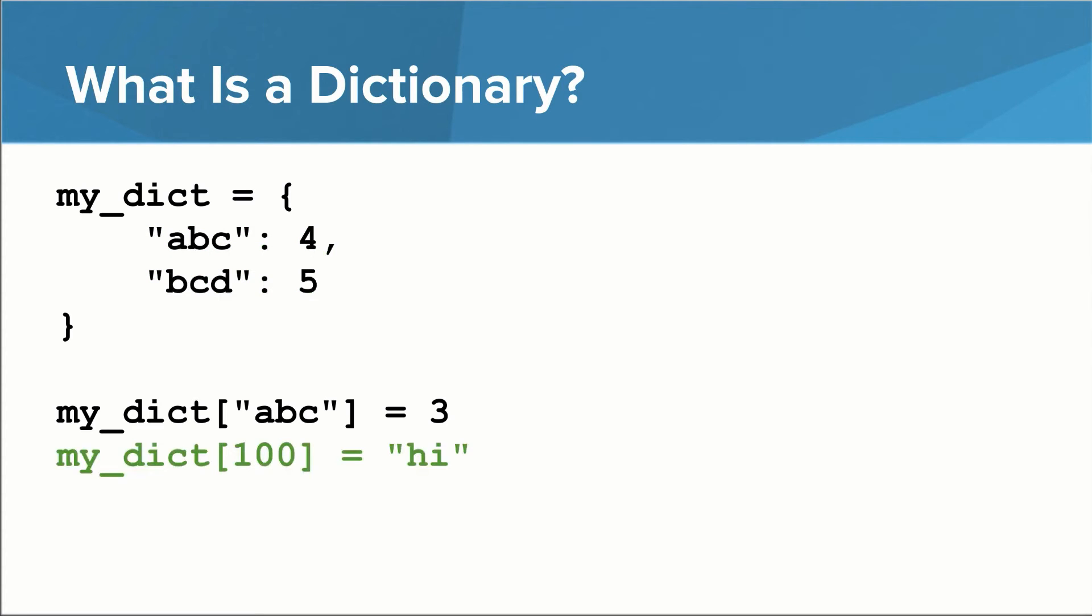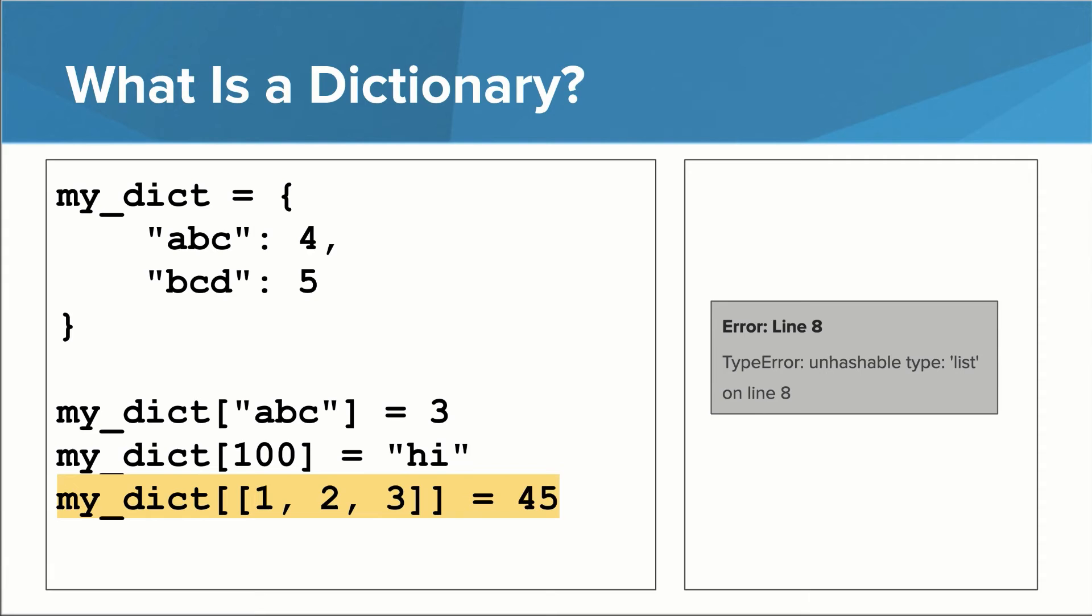The keys in a dictionary can be of different types. This dictionary now has a couple of string keys and an integer key. You cannot, however, use mutable things as keys. This program attempts to add a list as a key with a value of 45. If you try to run this, the error that appears complains about an unhashable type. If Python complains about something being unhashable, it probably means you're using something as a key that shouldn't be used as a key.